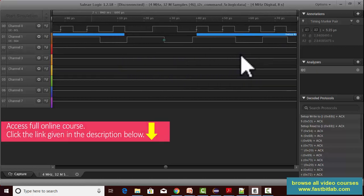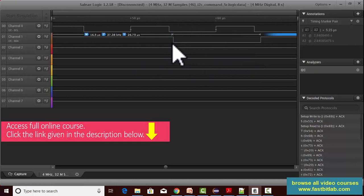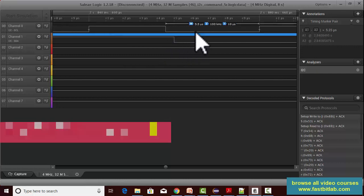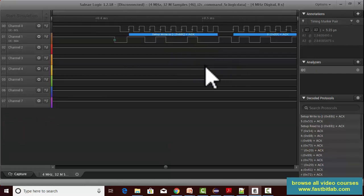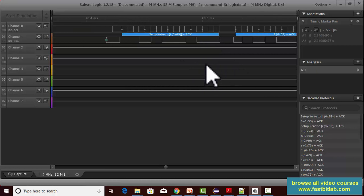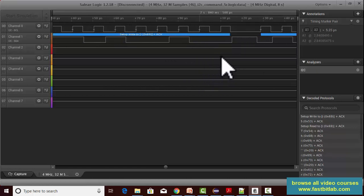For example, let's consider this transition. This transition is from high to low, and that is happening when the clock is low. That's why the data transition on the SDA line happens only when the clock is low.